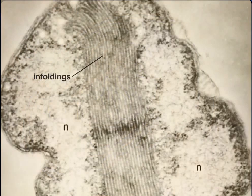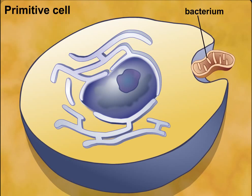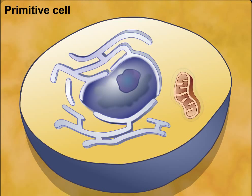The theory of endosymbiosis proposes that a critical stage in the evolution of eukaryotic cells involved endosymbiotic relationships with prokaryotic organisms. Microorganisms that live within other cells and perform specific functions for their host cells are called endosymbionts.